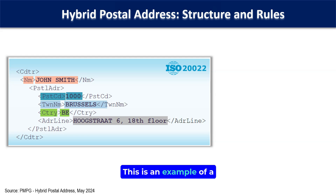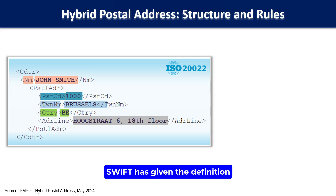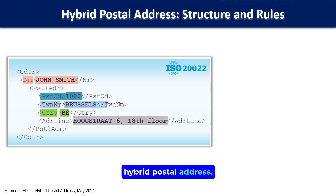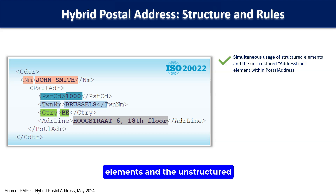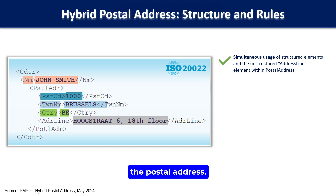This is an example of a hybrid postal address. Swift has given the definition and rules of populating a hybrid postal address. The hybrid address will allow simultaneous usage of structured elements and the unstructured address line element within the postal address.